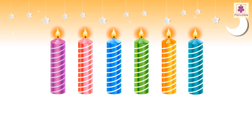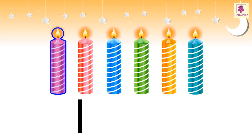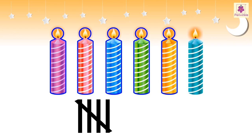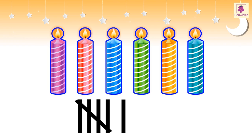Let us count the number of candles using tally marks: one, two, three and four straight lines, and a slant line across, and then again a vertical line. Hence we get the number of candles as six.